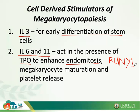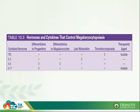To summarize the cytokines: interleukin-3 and TPO are for differentiation of progenitors (BFU-Meg through LD-CFU-Meg). For differentiation of megakaryocytes: TPO, interleukin-3, and interleukin-11. For late maturation: TPO, interleukin-6, and interleukin-11. For thrombocytopoiesis or platelet shedding: interleukin-6 and interleukin-11.